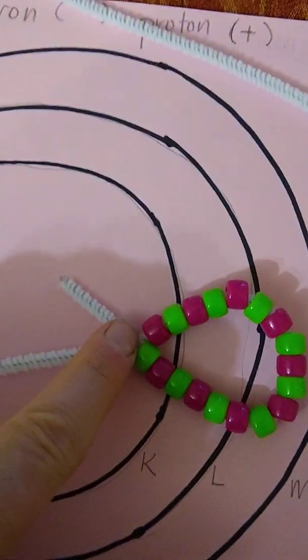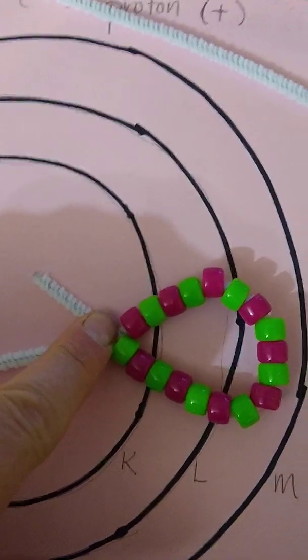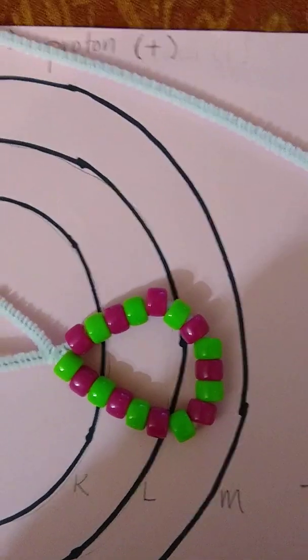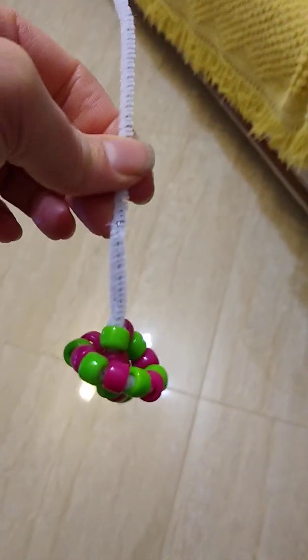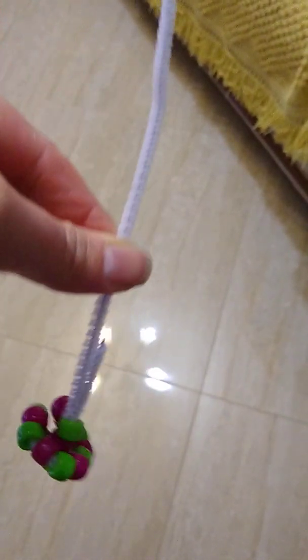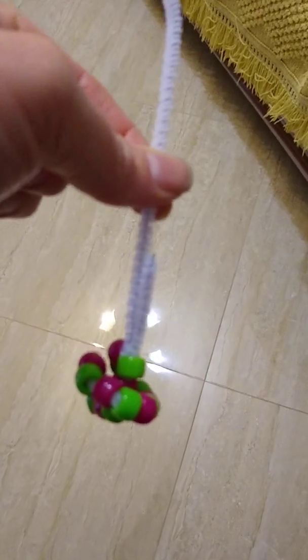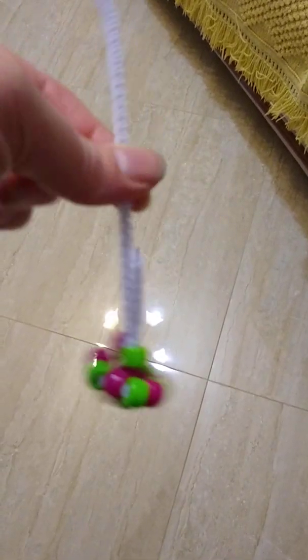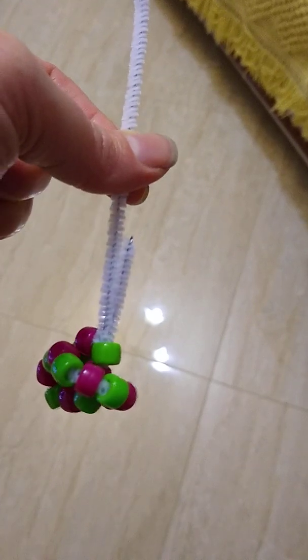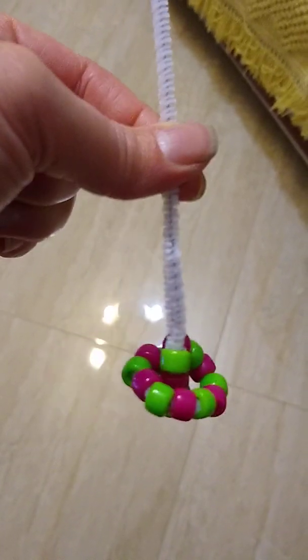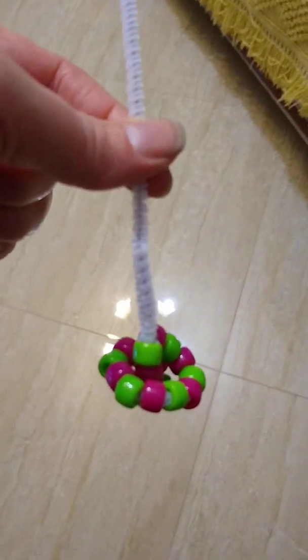I've twisted this like a bread tie. Now to wad this up. Here is my nucleus, and I leave enough at the top so I can attach the other pipe cleaners to make the K shell and L shell.